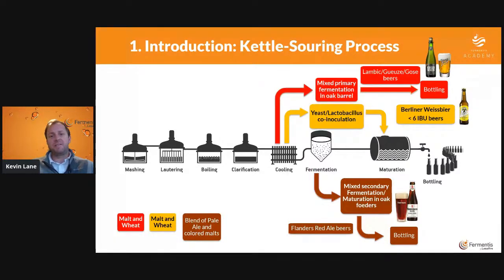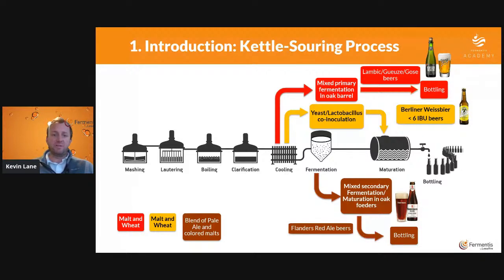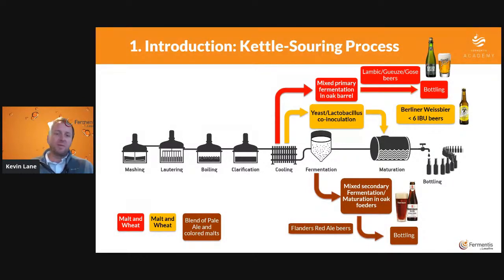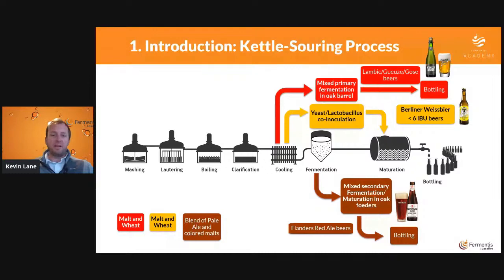A third way is a mixed secondary fermentation. You do the normal beer process through fermentation, then go to a secondary fermentation where you do a mixture of different yeast and bacteria. Typically this will be carried out in oak foeders in Flanders red ale-type beers, and then go to bottling after that.